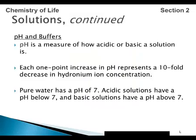pH and buffers. pH is the measure of how acidic or basic a solution is. Each one-point increase on the pH scale represents a ten-fold decrease in hydronium ion concentration. Pure water has a pH of 7 — 7 is neutral. Acidic solutions have a pH below 7, and basic solutions have a pH above 7. The scale ranges all the way up to 14.